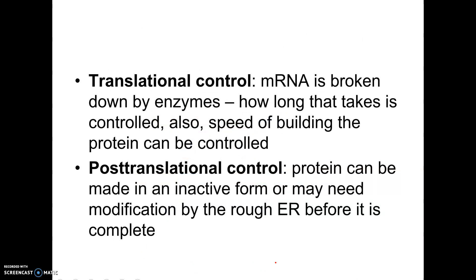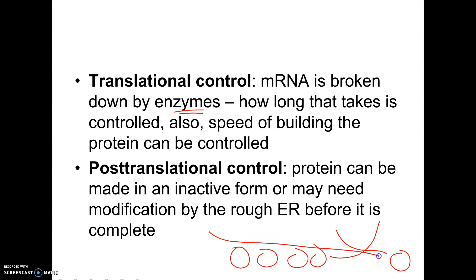Translational control: once the mRNA leaves the nucleus and goes to the ribosome, it has a cap and a tail that help prevent it from getting broken down. But enzymes will ultimately break it down — so how long does that mRNA last, hours, minutes, or days? The number of these enzymes we make can determine how long that mRNA is active and how many proteins it makes, since ribosomes lining the rough ER can each make another copy of the protein as the mRNA feeds through. An mRNA that lasts a long time feeds through many ribosomes and makes lots of proteins; one degraded quickly makes hardly anything.